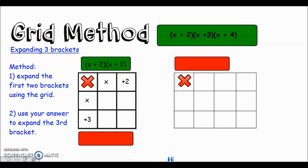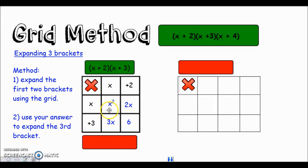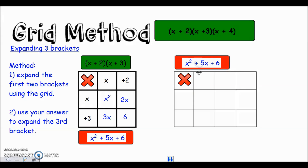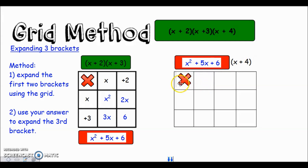Filling out the grid for the first two brackets in the normal fashion: x times x is x squared, two times x is two x, three times x is three x, and two times three is six. Combining the three x and two x gives us x squared plus five x plus six. We then take that answer and use it to multiply the third bracket - it's almost like we've got three terms in a bracket being multiplied by the final third bracket.